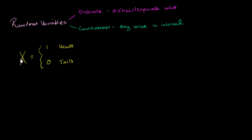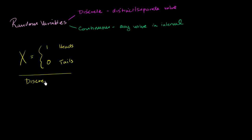This random variable can take on distinct values — it can take on either 1 or 0. Another way to think about it: you can count the number of different values it can take on. This is the first value, this is the second value. So this is clearly a discrete random variable.